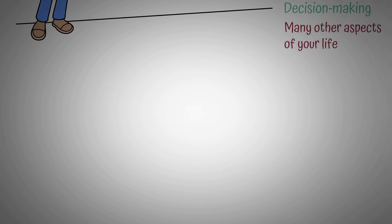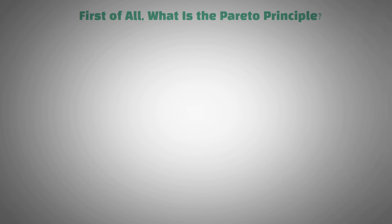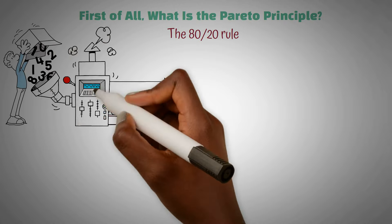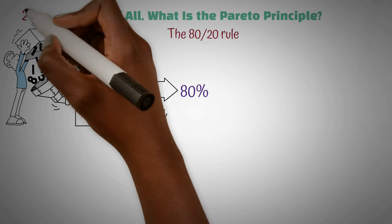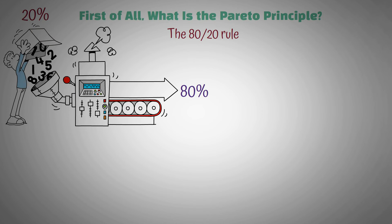First of all, what is the Pareto Principle? Also known as the 80-20 rule, the Pareto Principle states that roughly 80% of the results come from 20% of the efforts. In simpler terms, a small part of what you do can have a big impact.